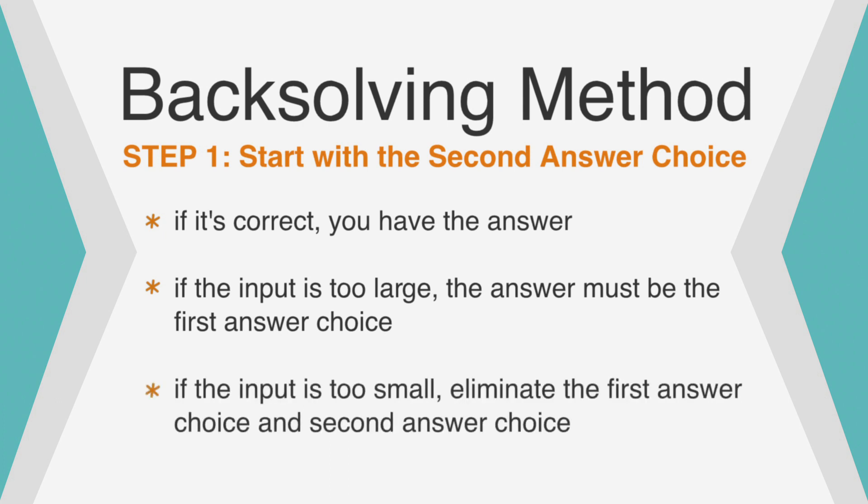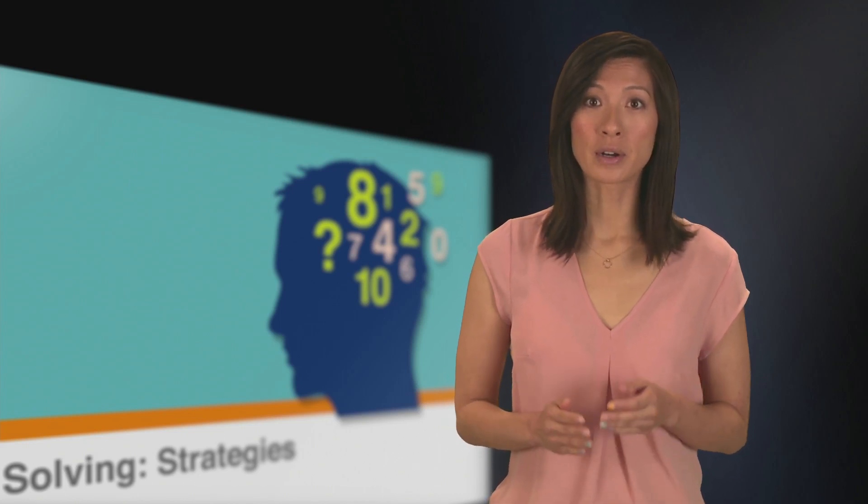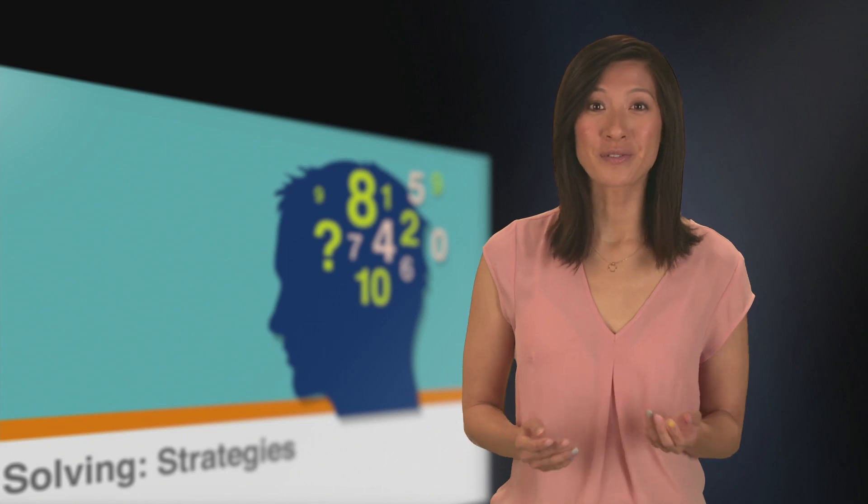If the input is too small, that means the first and second answer choices are too small, and you can eliminate them both. Since we can determine if the first and second choices, two out of five, are correct or not, it means we have a 40% chance of finding the answer on the first try.